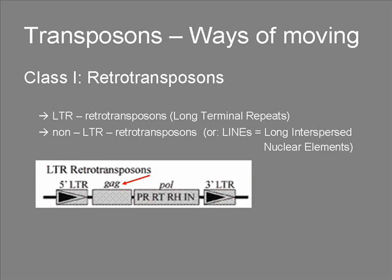LTR retrotransposons are similar to retroviruses in their reproduction. They encode structural proteins, such as a capsid and a nucleocapsid, which correspond to the Gag genes of retroviruses. And they encode enzymes, such as reverse transcriptase and endonuclease, which correspond to the retrovirus Pol genes.